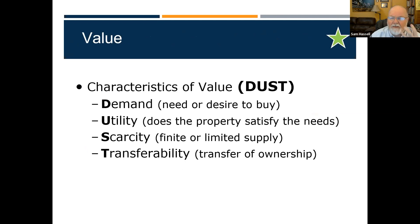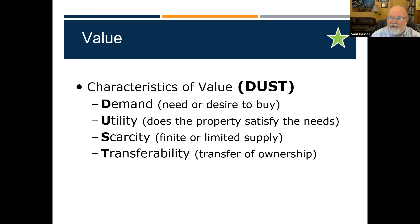There are four characteristics of value — the acronym is DUST: demand, utility, scarcity, transferability. The first is demand. If nobody wants something, does it have any value? Does anybody have a rotary phone anymore? Nobody has one — it doesn't have any value. There's no demand. Nobody wants one.